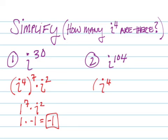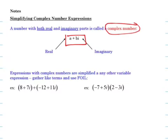i to the one hundred and fourth is i to the fourth to the twenty-sixth power, which is 1 to the twenty-sixth power, which equals 1. We define a complex number as a plus bi, where a and b are real numbers. The imaginary component is the bi part, and a is our real component.